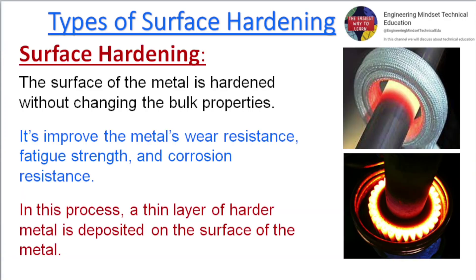Surface hardening. The surface of the metal is hardened without changing the bulk properties. It improves the metal's wear resistance, fatigue strength, and corrosion resistance. In this process, a thin layer of harder metal is deposited on the surface of the metal.